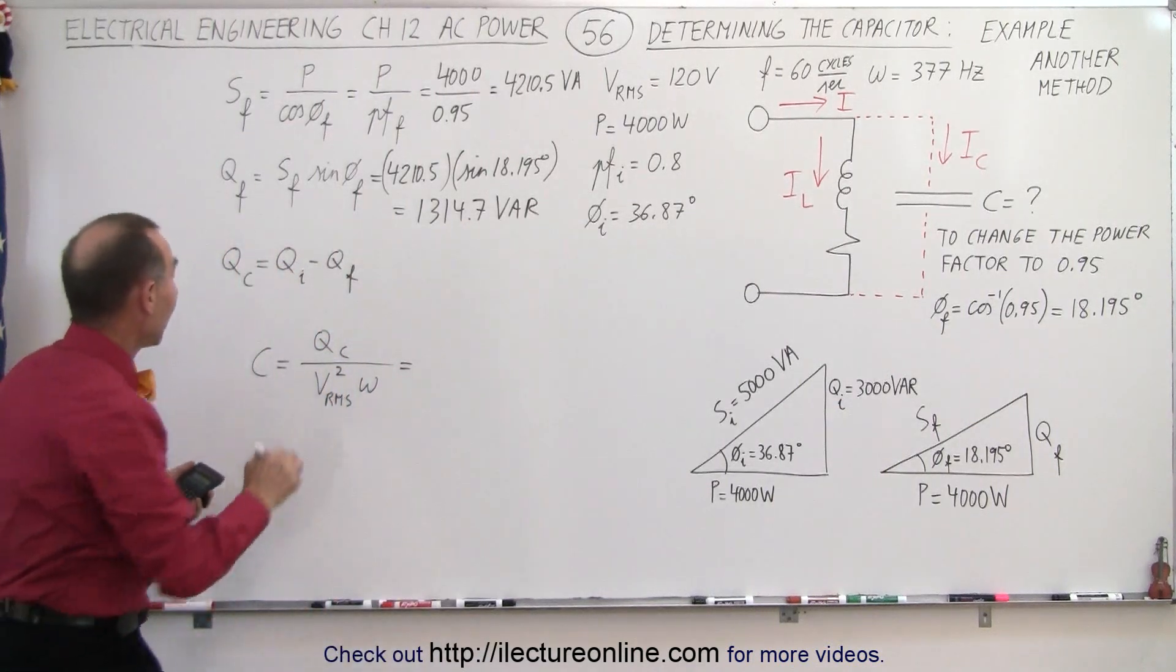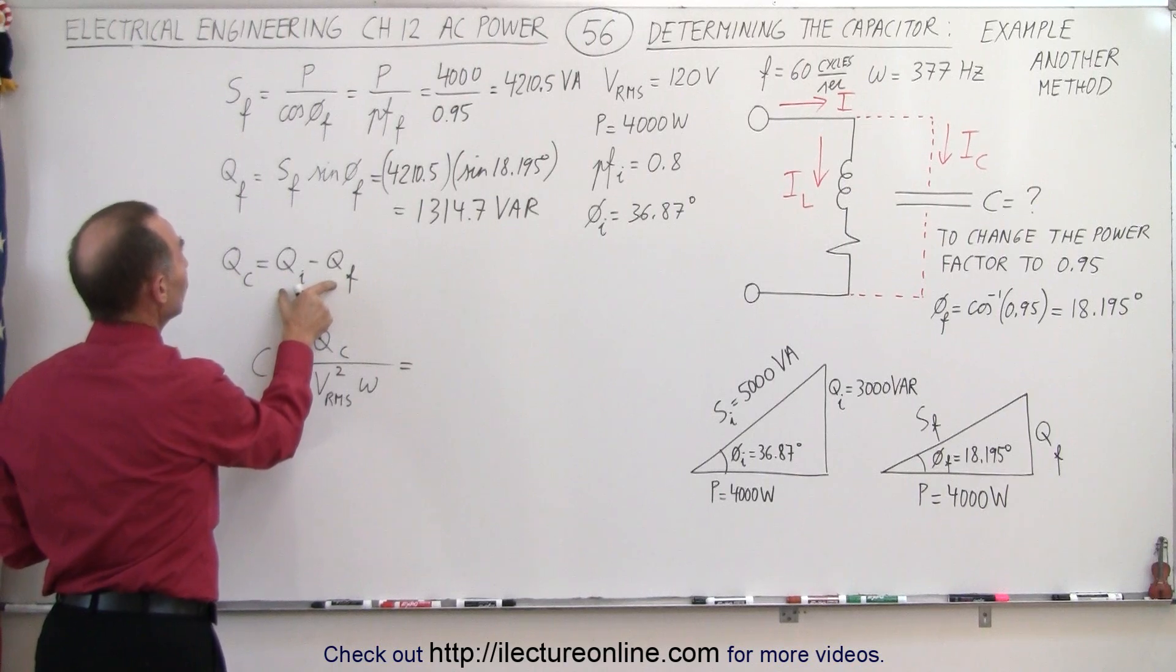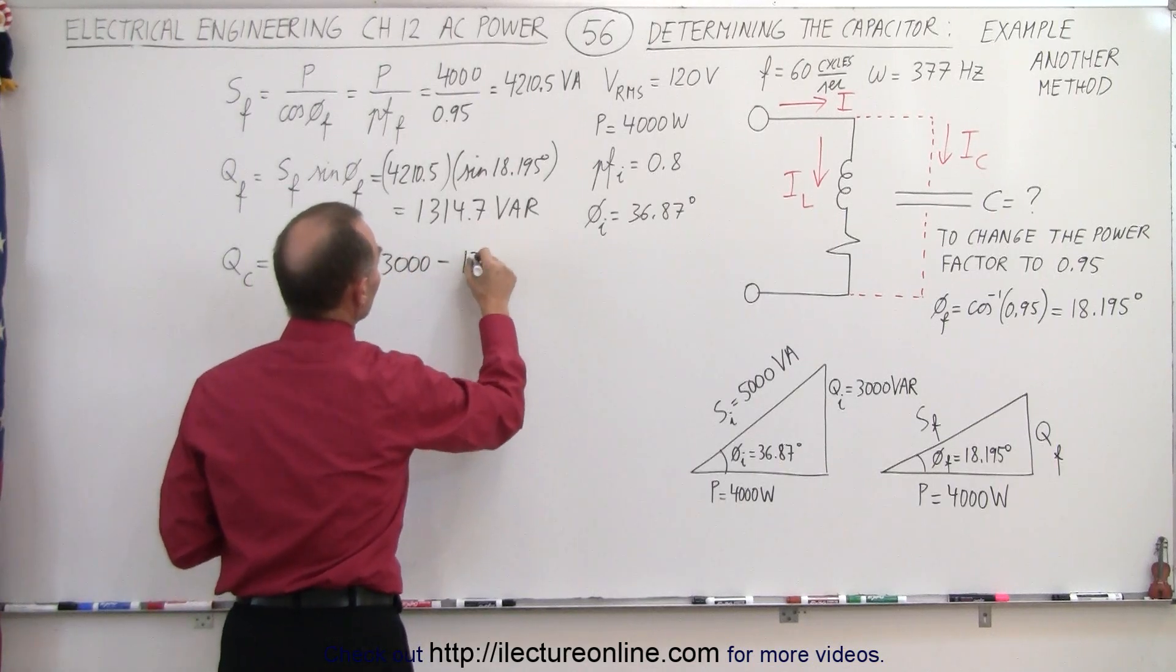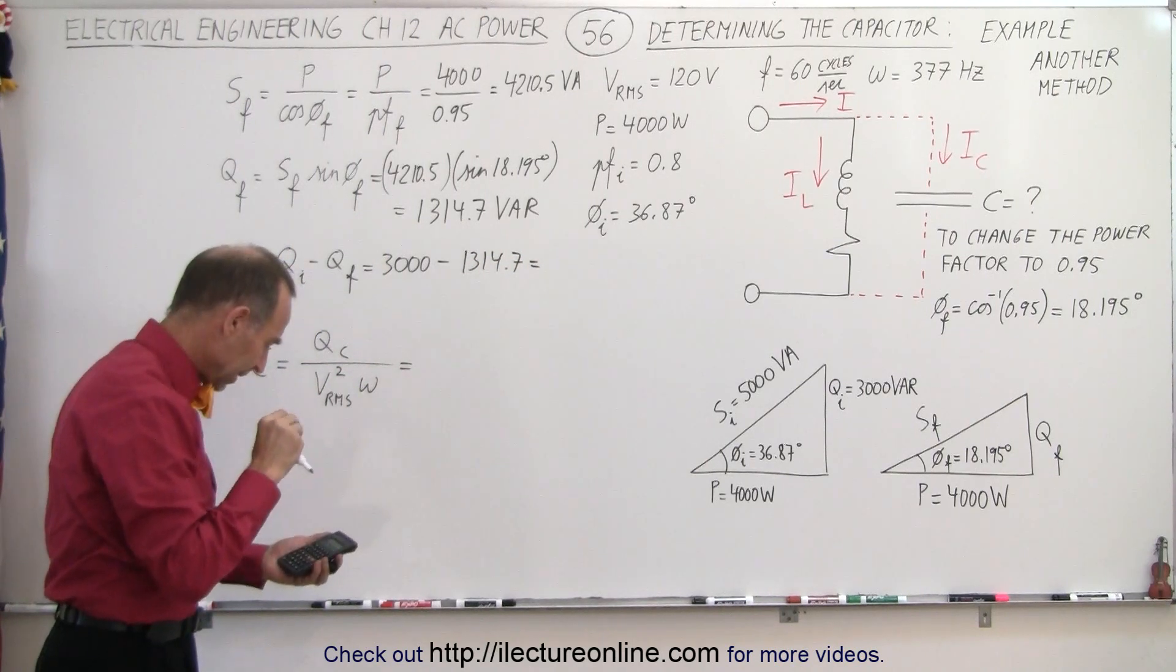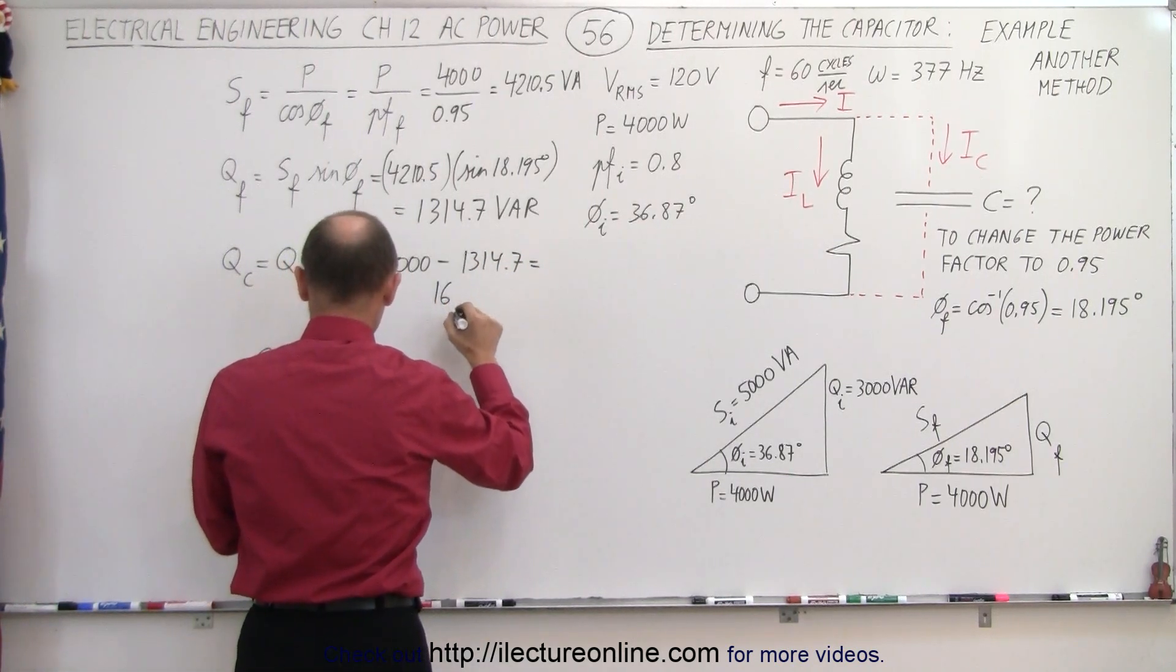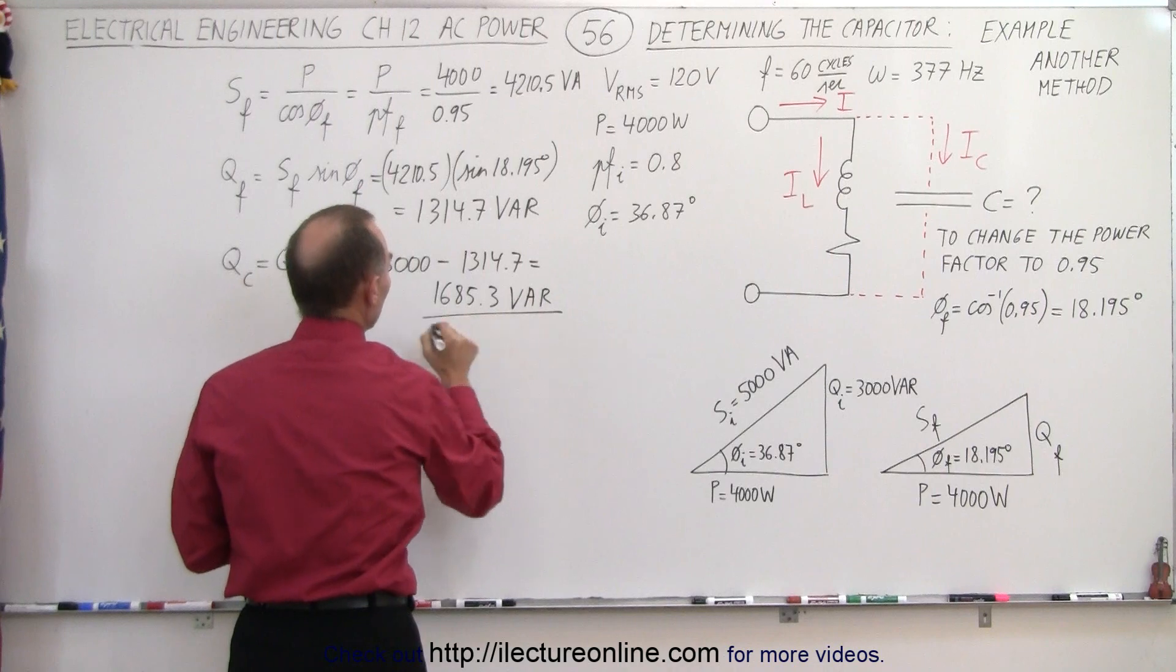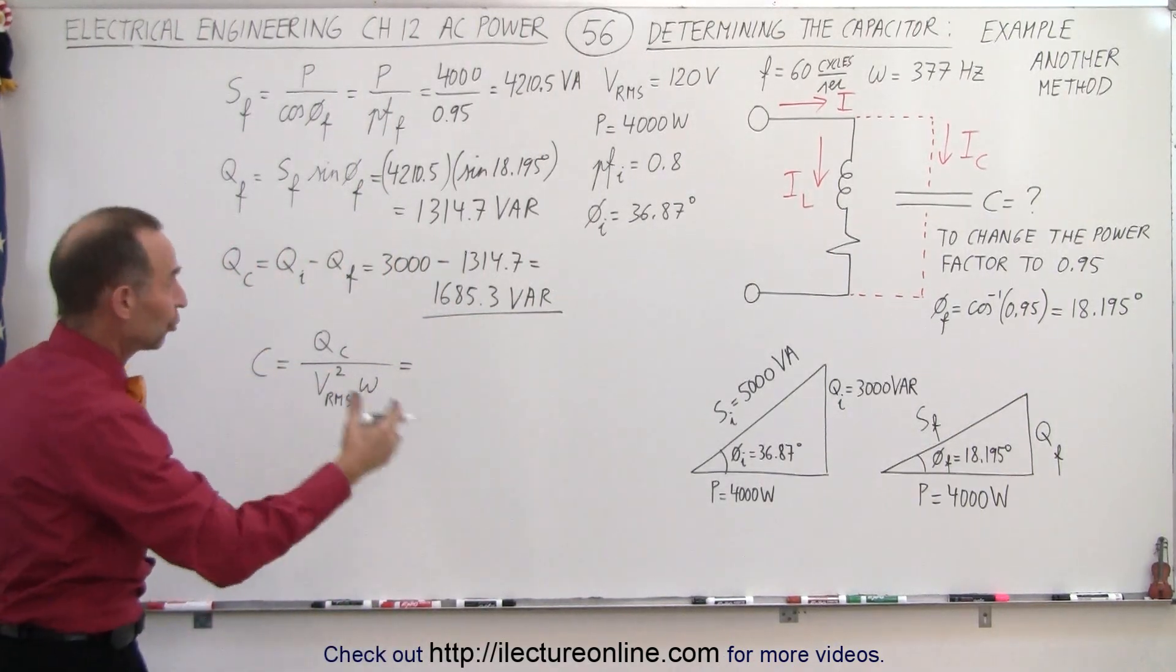Now I find the capacitive reactive power by taking the difference between the two. So the initial Q was 3000, subtract from that the final Q, which is 1314.7, and that gives us a value of 1685.3 VAR. So that would be the capacitive reactive power of the new circuit.